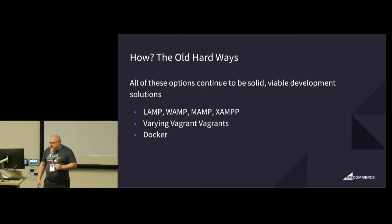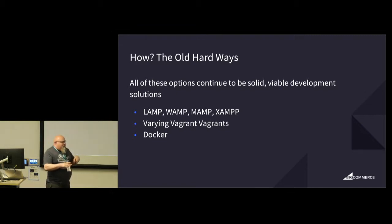Varying Vagrant Vagrants — Vagrant is a system for making recipes for virtual machines. People usually use it with VirtualBox. You use Vagrant to create a recipe that says, I want this version of this software and this version of this software, and I want them all installed in this order. Then you can distribute that recipe, and somebody can pull down just the recipe and run it, and it will install Linux, Apache, MySQL, and all that kind of stuff. VVV is a specifically WordPress-oriented system — the recipe is WordPress.